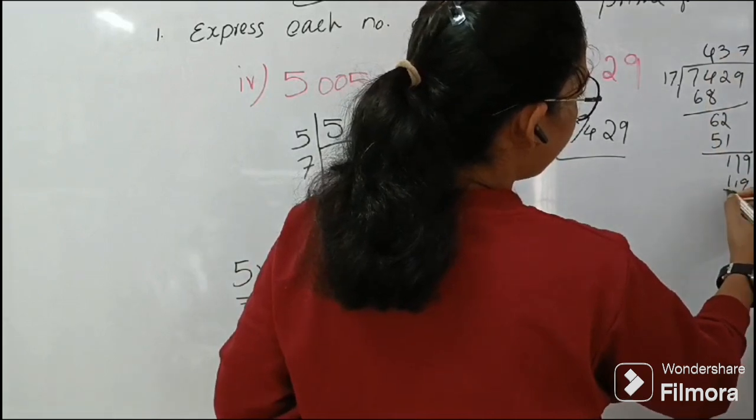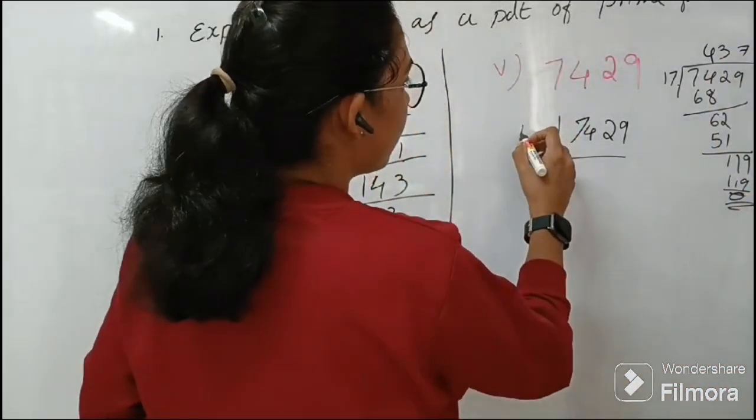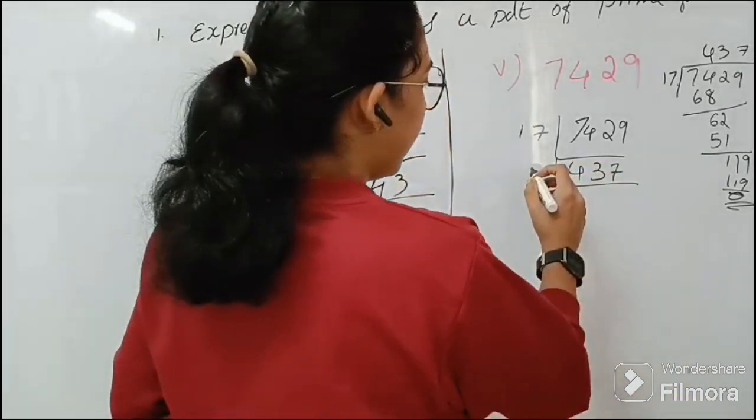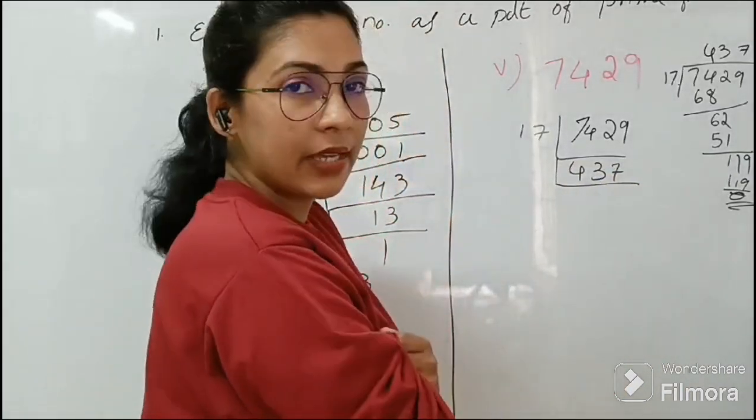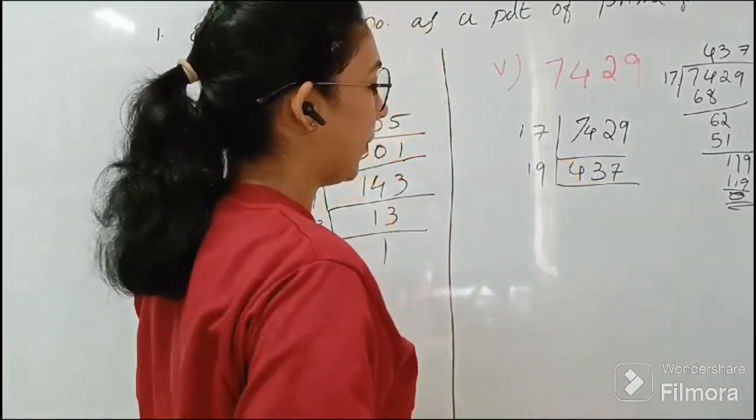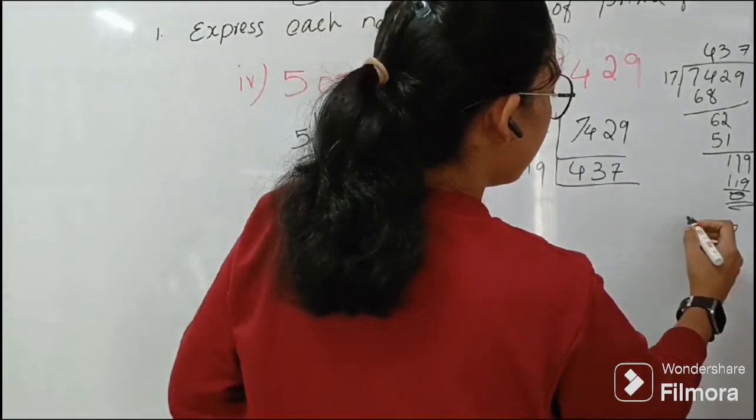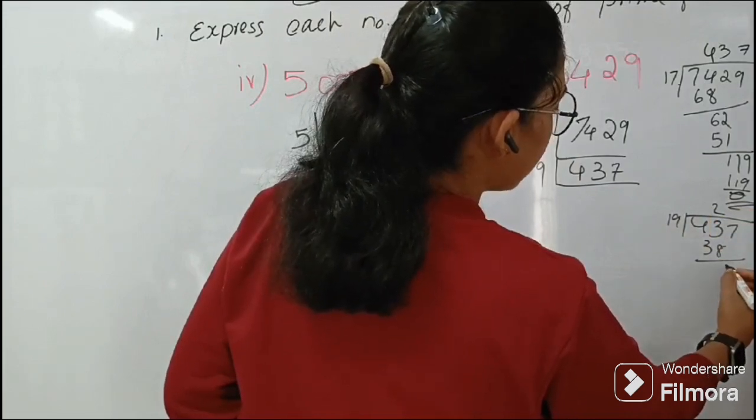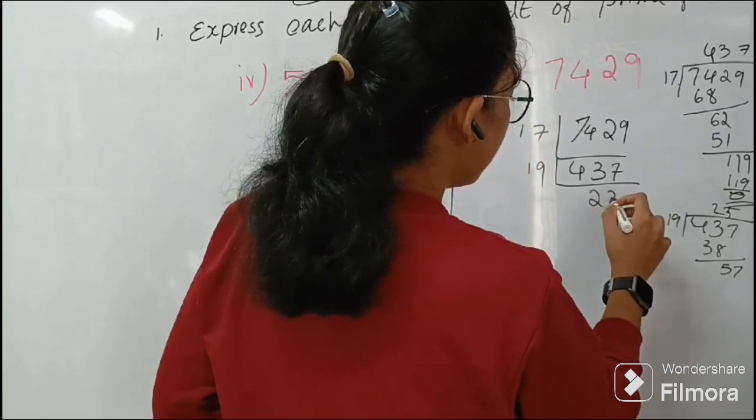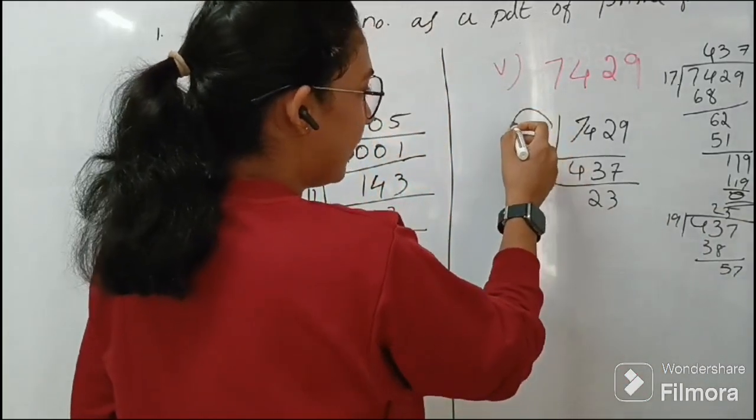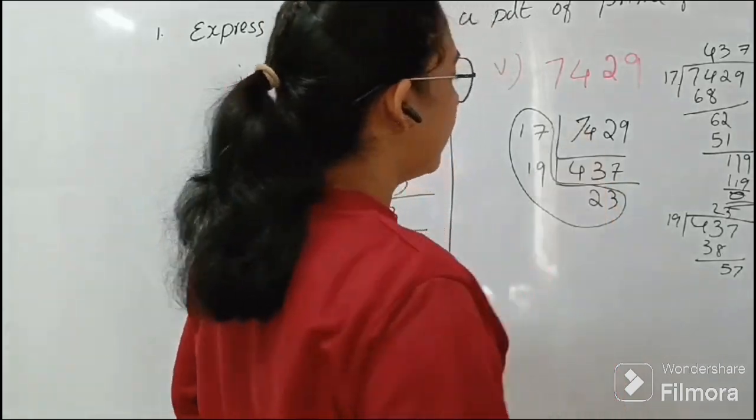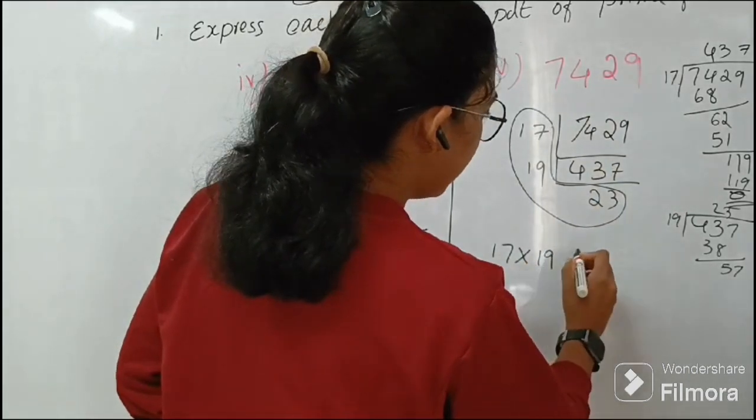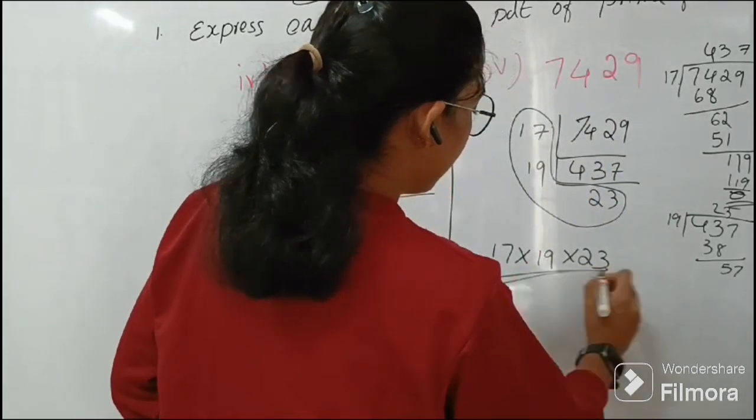So 17. Next, this 437 can be completely divisible by 19. So what is the answer? 19, 23. 19 times 2 is 38, 57, 23. Here it is 23. And we know that 17, 19, and 23, all these are prime factors. So factors of 7429 is 17 into 19 into 23. So this is the answer.